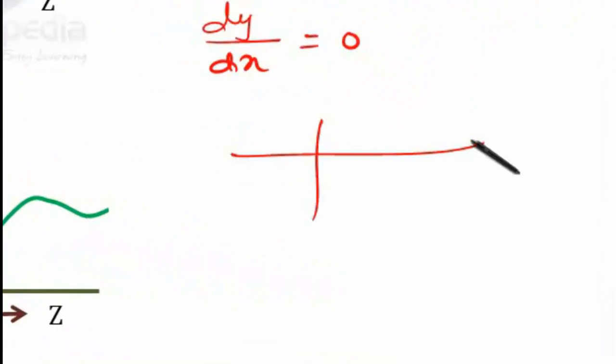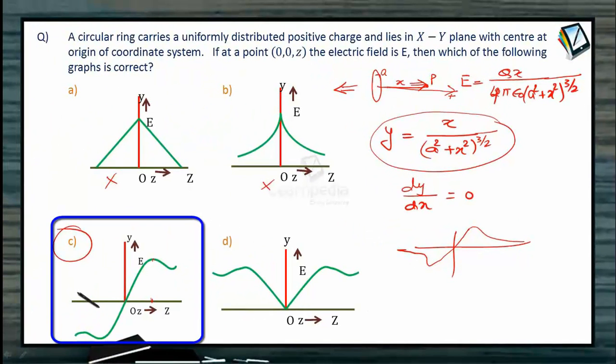Normally, the graph goes like this: the field first increases, and then decreases to 0, and the same thing happens on other side, but in negative direction. So, option C will be the best option to this question.